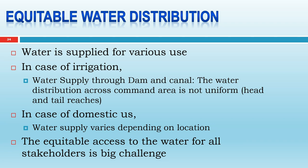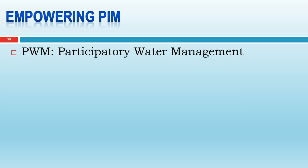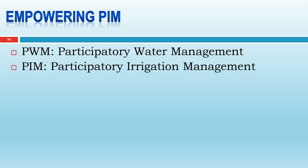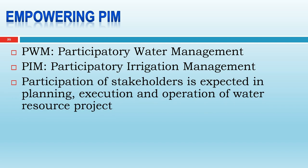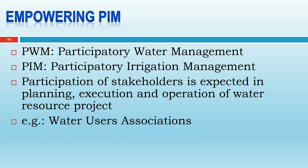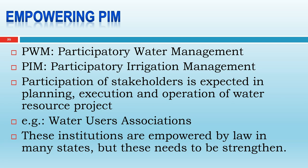Participatory water management (PWM) or participatory irrigation management (PIM) is an important concept. Participation of all stakeholders is expected in planning, execution, and operation of water resource projects. An example is management of irrigation through water user associations (WUAs) — bodies created by the department or state government that encompass all farmers as stakeholders. These institutions are empowered by law in many states, but water user associations need to be strengthened.